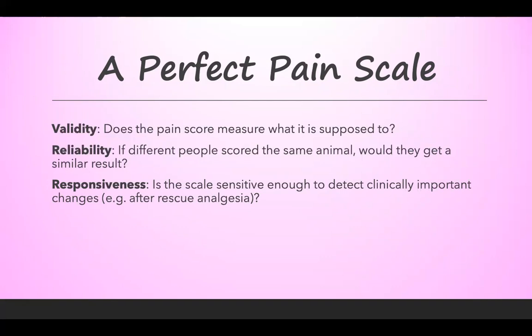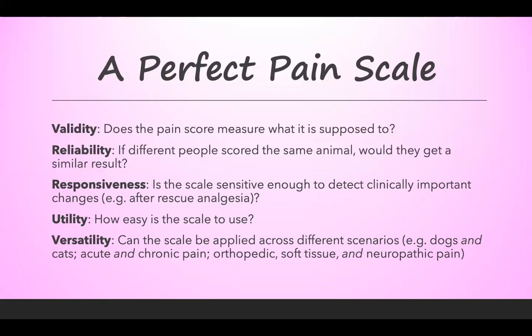Responsiveness is also important — the scale needs to be sensitive enough to detect clinically important changes. So if an animal is determined to be painful and you give an analgesic that fixes the problem, does the scale reflect that? Then there's utility: how easy is the scale to use? A very cumbersome pain scale won't encourage compliance in a busy ICU. Versatility would also be nice — can the scale apply to different species, and different types of pain like orthopedic, soft tissue, or neurologic patients?